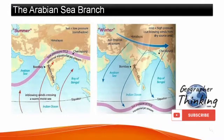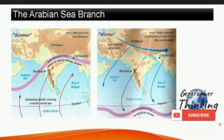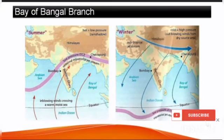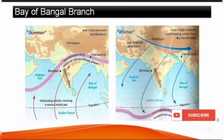The southwest wet monsoon consists of two main branches. The first is the Arabian Sea branch: the main westerly current from the Arabian Sea meets the Western Ghats at nearly a right angle and flows across peninsular India, penetrating western areas of India and southern Pakistan. The second is the Bay of Bengal branch: another main branch penetrates the Bay of Bengal into Bangladesh and northeastern India, and is further pushed westward into the densely populated Ganges plains of northern India by the Himalayan mountain wall.